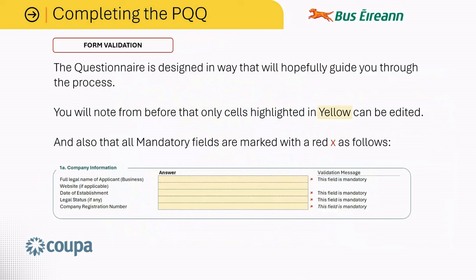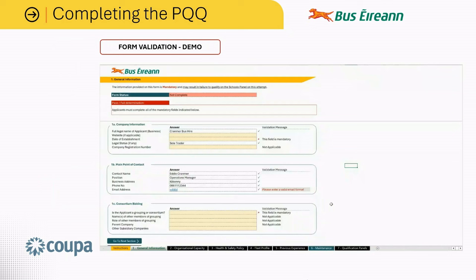There are validation rules built throughout the questionnaire designed to guide you through the process. Only cells highlighted in yellow can be edited, and all mandatory fields are marked with a red X. The first piece of validation in the form is located at the top under the form status heading. By default, this will be set to 'not complete' and will later change to 'complete' once the user has completed all of the mandatory fields.